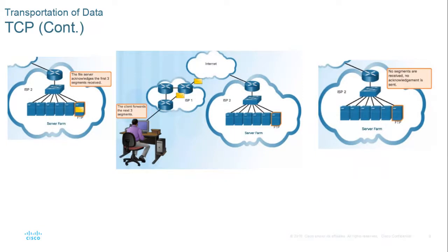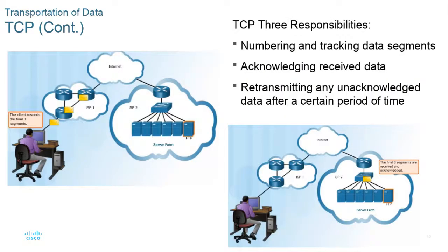TCP uses positive acknowledgement and retransmission: we break data into segments, send a chunk to the receiving device, and it sends back an acknowledgement that it received the data and is okay to receive more. If the receiving host fails to acknowledge, the sending workstation automatically sends another copy. TCP's three big responsibilities are: sequencing and acknowledgement numbers to track data segments, acknowledging received data, and retransmitting any unacknowledged data. The receiving workstation uses sequence numbers to put data back in the correct order.